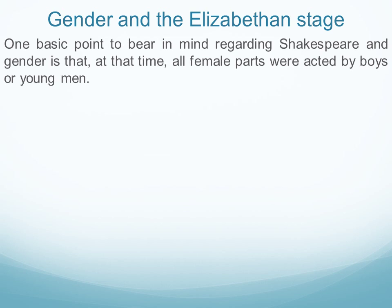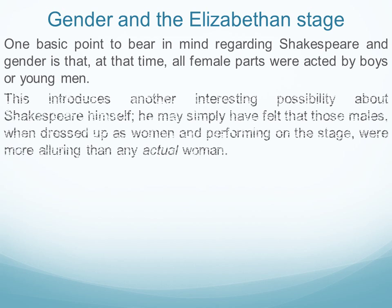All the female parts were acted by boys or young men — those attractive women would have been played by boys or very young men. That's another possibility some people argue in relation to Shakespeare himself: he might have felt that those males when dressed up as women were more attractive than any actual women. That woman on the stage was for him a perfect woman, but he knew that actually it wasn't a woman — so it's a paradox.